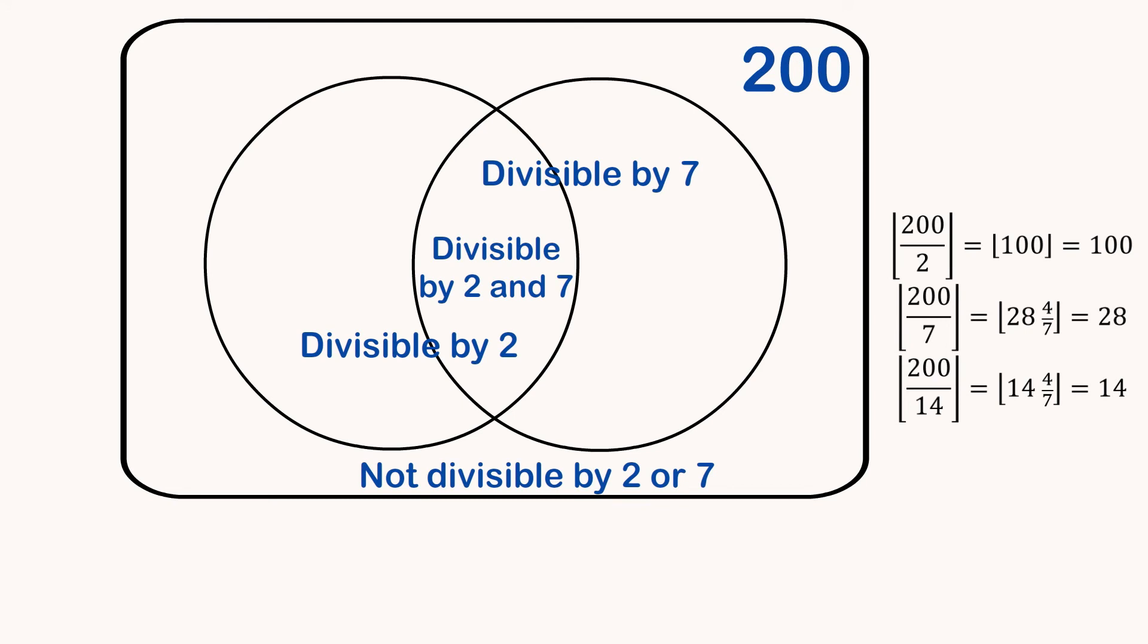So that's the floor of 100. We're also going to need the number of numbers that are divisible by 7, and every seventh number up to 200 is divisible by 7. So it turns out that we need the floor of 200 divided by 7, which is the floor of 28 and 4 sevenths, which is 28.